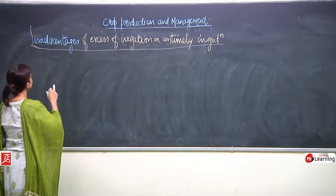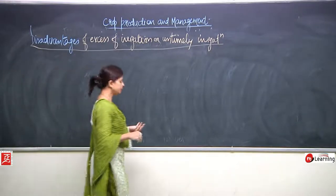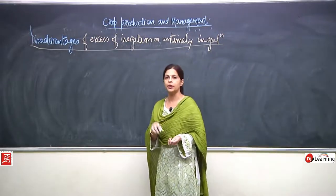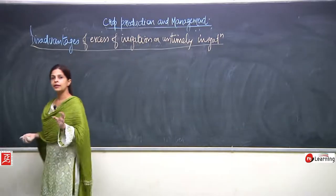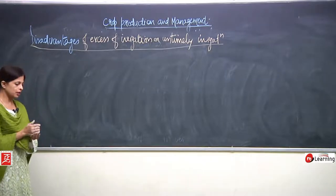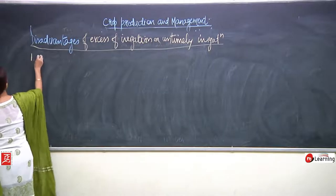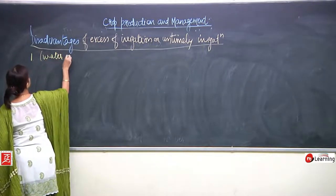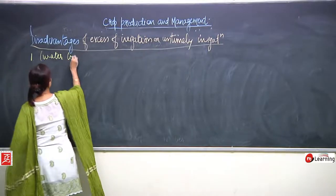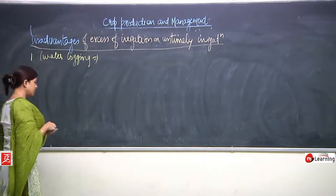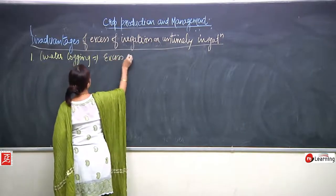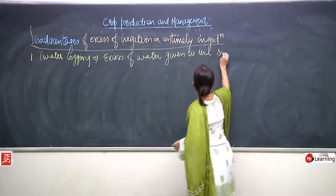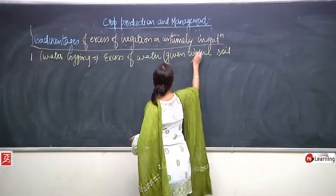We are studying disadvantages of excess irrigation and untimely irrigation - that means if water is not provided when required. One new word to introduce here is water logging. Water logging means excess of water present in the soil.